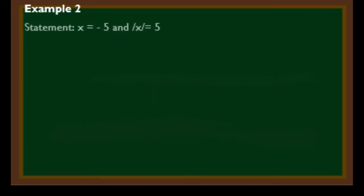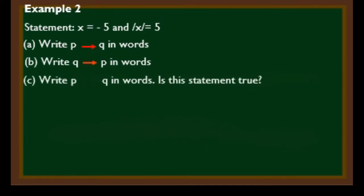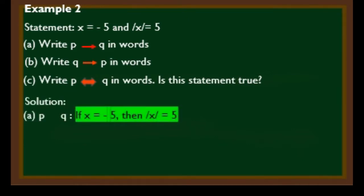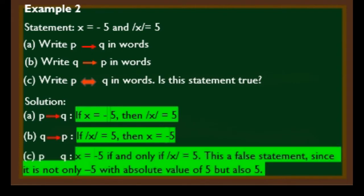Example: given statements x equals negative 5 and absolute value of x equals 5. A) P implies Q in words: if x equals negative 5, then the absolute value of x equals 5. B) Q implies P: if the absolute value of x equals 5, then x equals negative 5. C) P if and only if Q: x equals negative 5 if and only if the absolute value of x equals 5. This is a false statement since not only negative 5 has an absolute value of 5, but also positive 5.